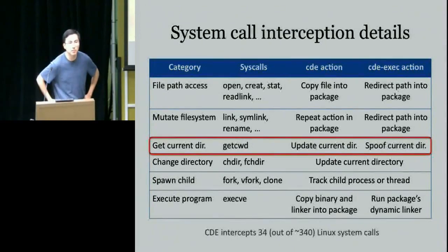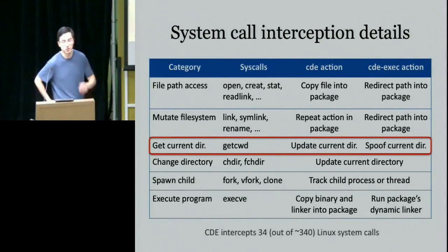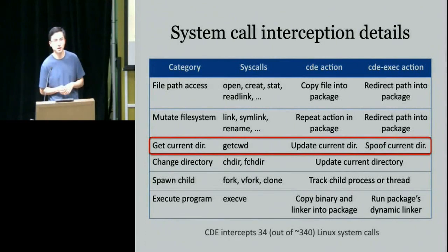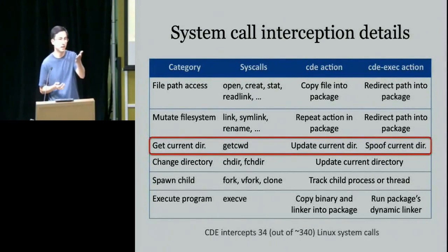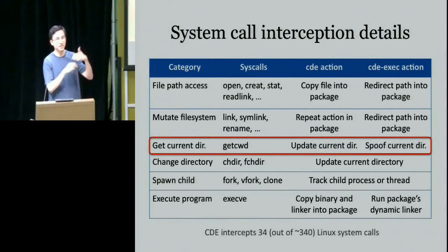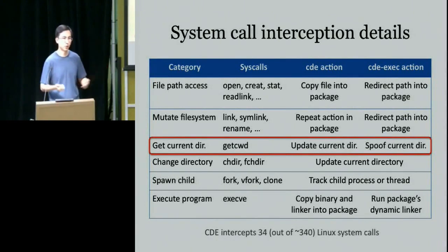A question was raised: how do you distinguish between files that belong to one machine — like /etc config files — versus files you can share like libraries? There is a configuration file where you can specify files to ignore, and there's a canned list of about a dozen or so files built up from empirical experience. One example is /etc/hosts — if you move the hosts file, networking doesn't work on the other machine. The user can add to that list, and with the canned list, things work out of the box pretty much all the time.